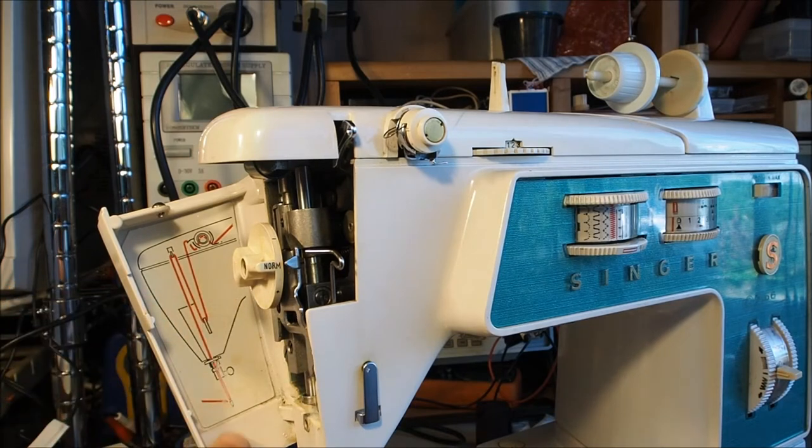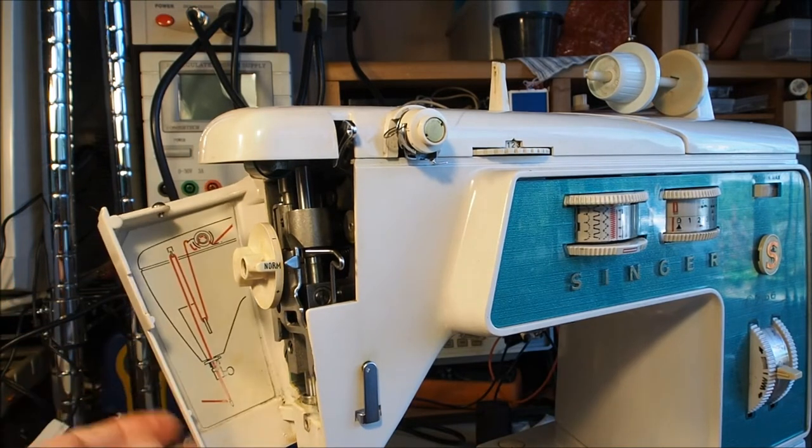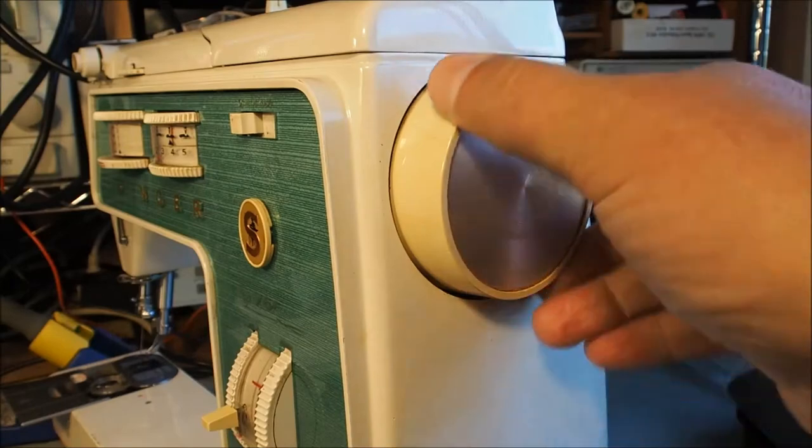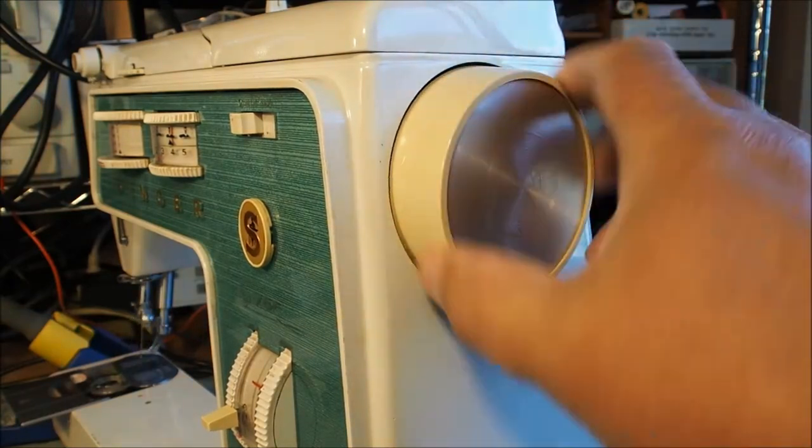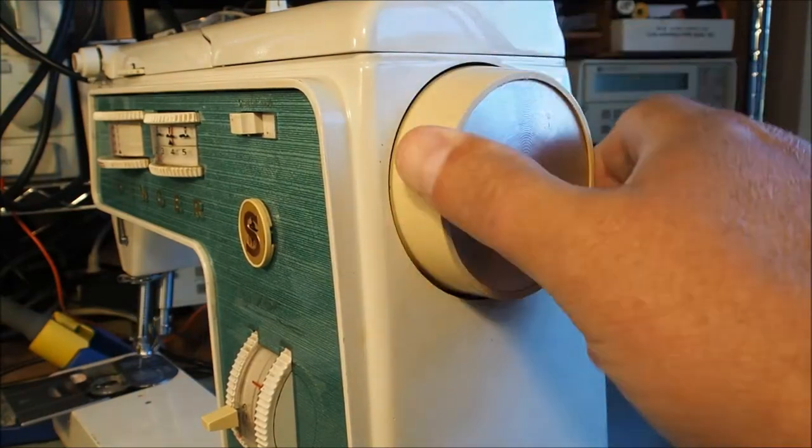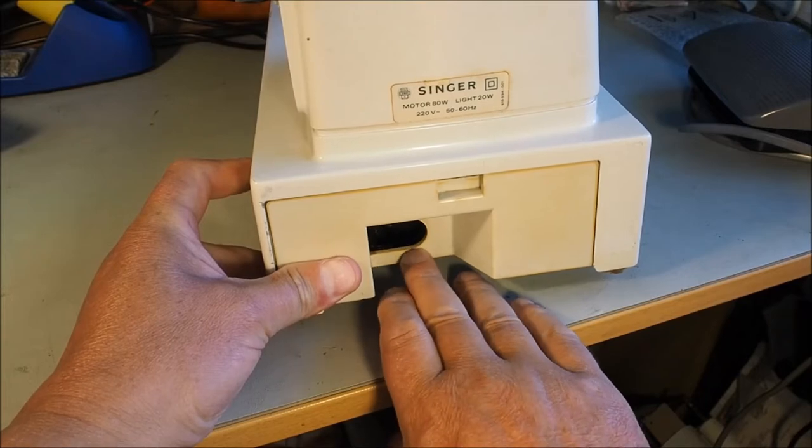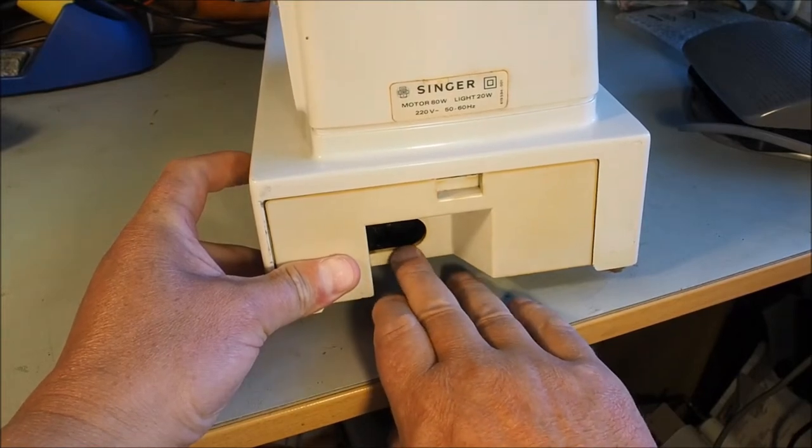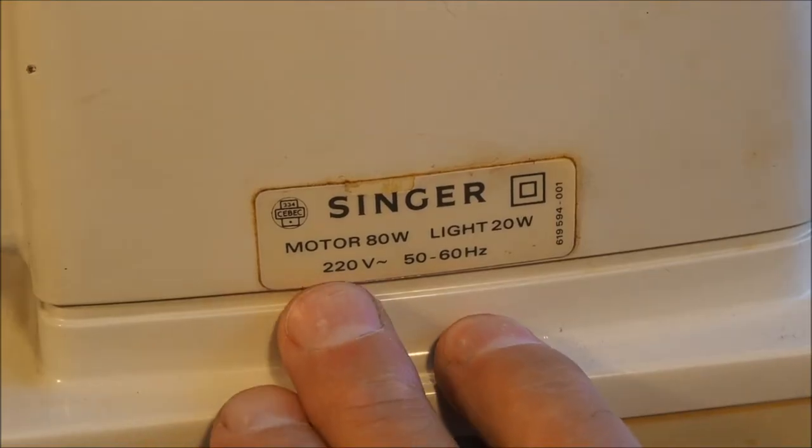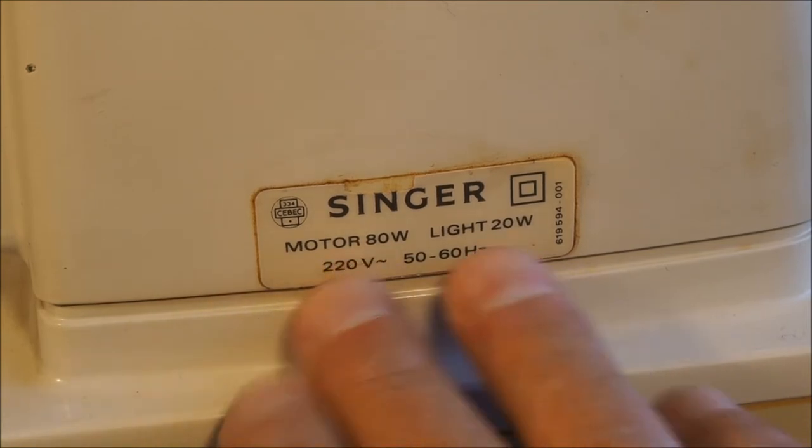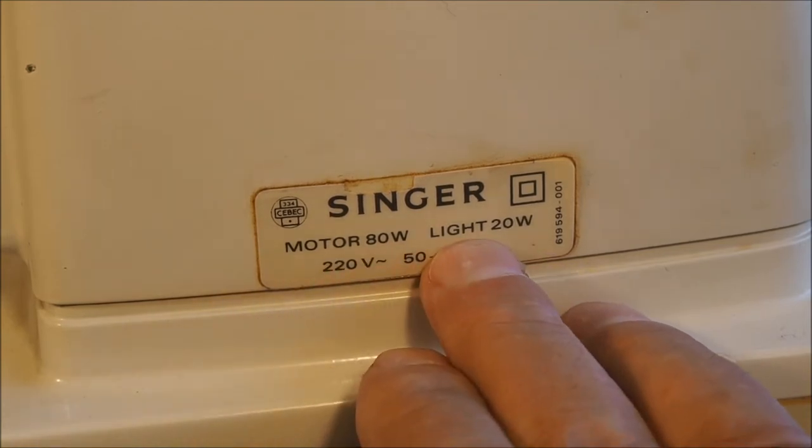There's a handy threading guide inside the face plate. Around this side, we've got a standard hand wheel and the socket for the plug. This is the 220 volt version with an 80 watt motor and 20 watt light bulb.